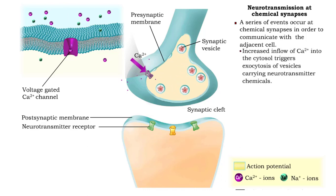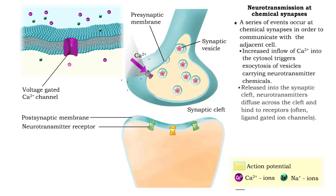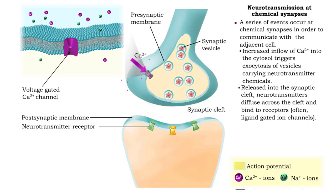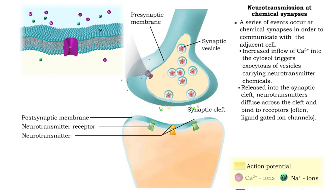Increased calcium in the cytosol triggers exocytosis of synaptic vesicles carrying neurotransmitter chemicals, releasing them into the synaptic cleft. Neurotransmitters diffuse across the cleft and bind to receptors, often ligand-gated ion channels.